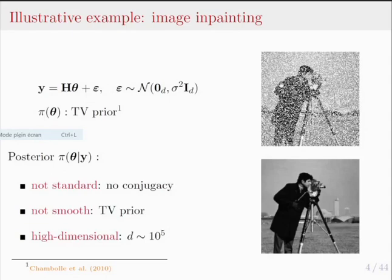The goal is to recover the original image, depicted at the bottom right, from the observation Y at the top right. The challenges are that the posterior distribution pi(theta|Y) is non-standard — the TV prior is not conjugate with the Gaussian likelihood — it is not smooth due to the total variation prior, and it is high-dimensional because you must estimate all pixels of the image. For standard images, the dimension can be roughly 10^5, which is quite large.